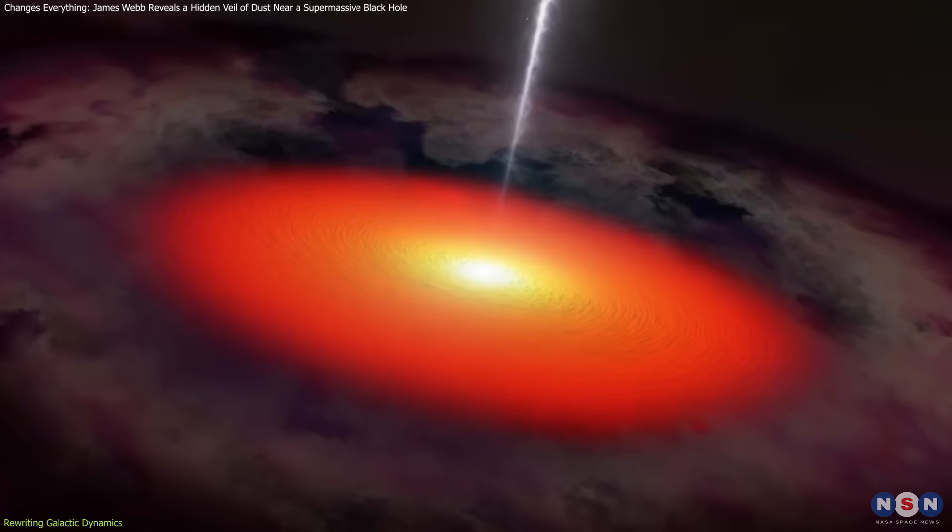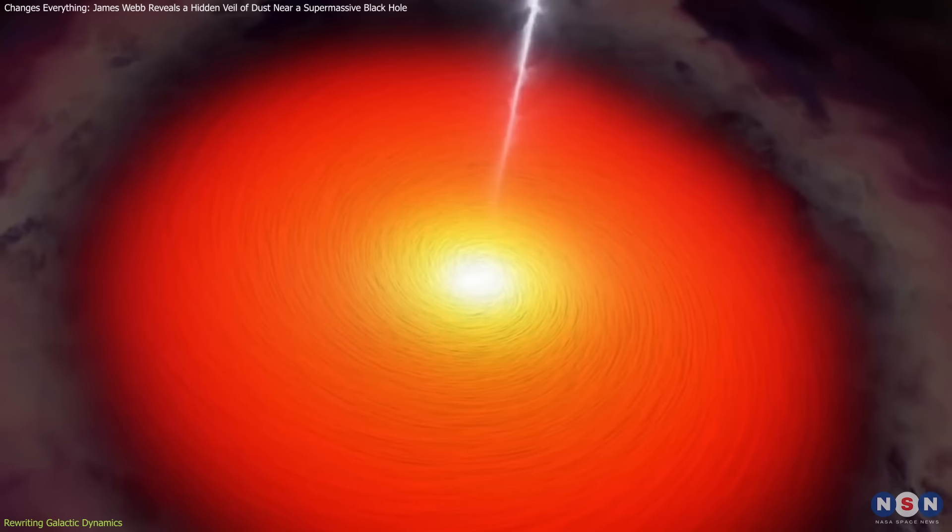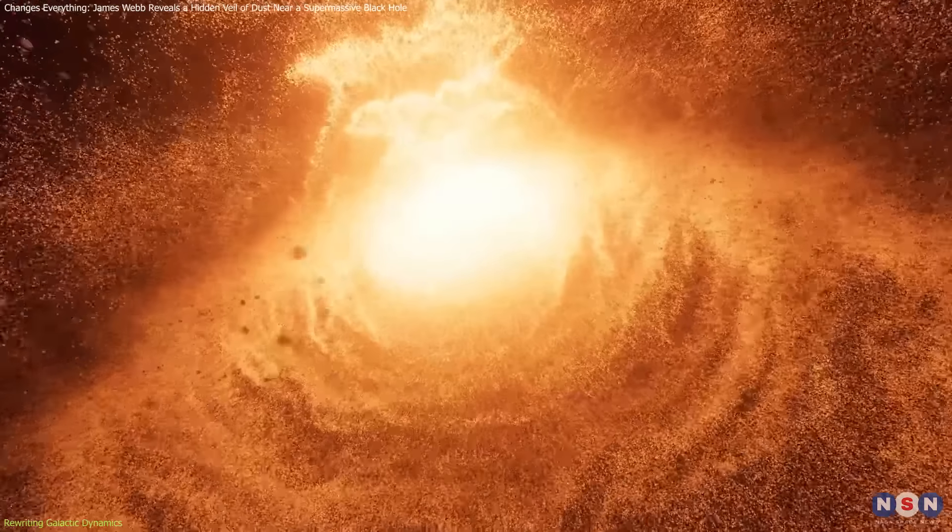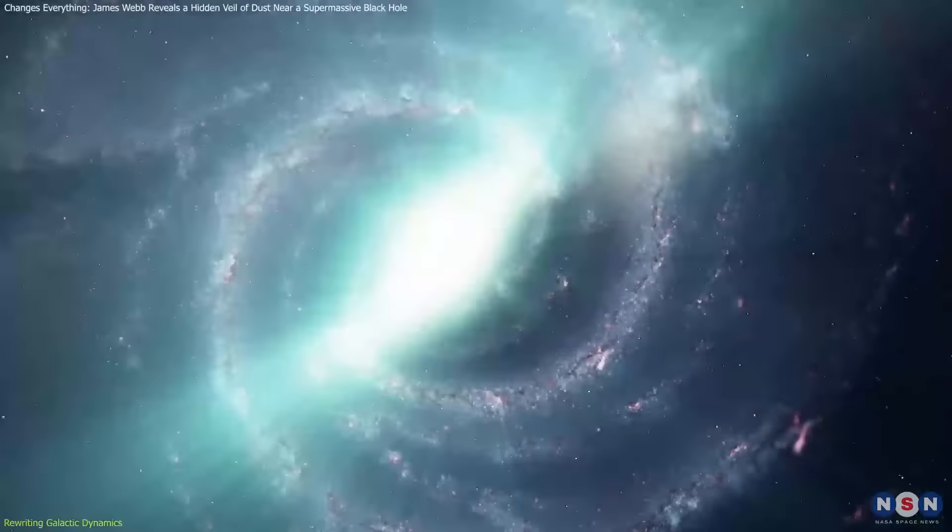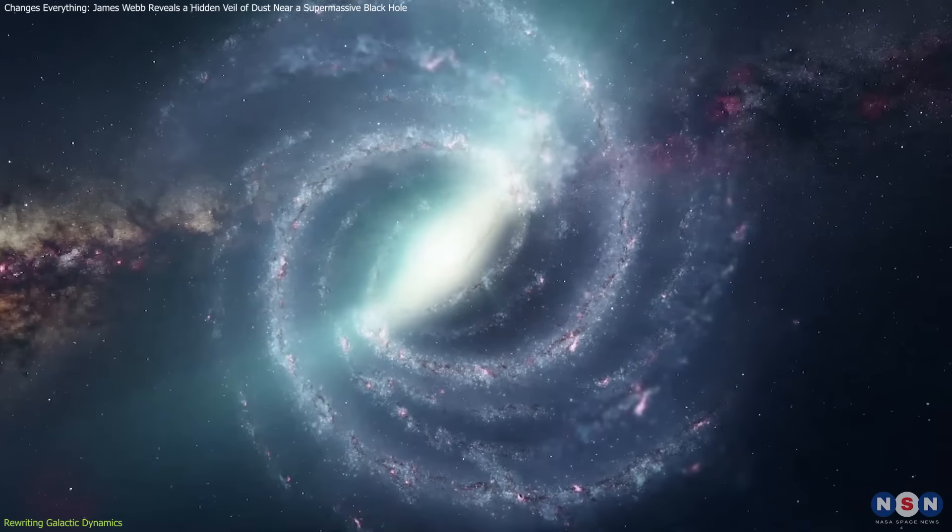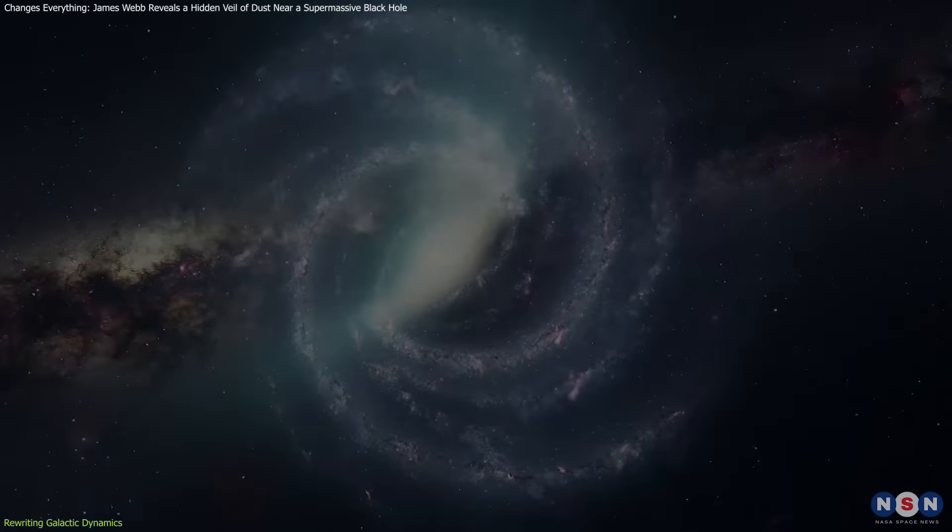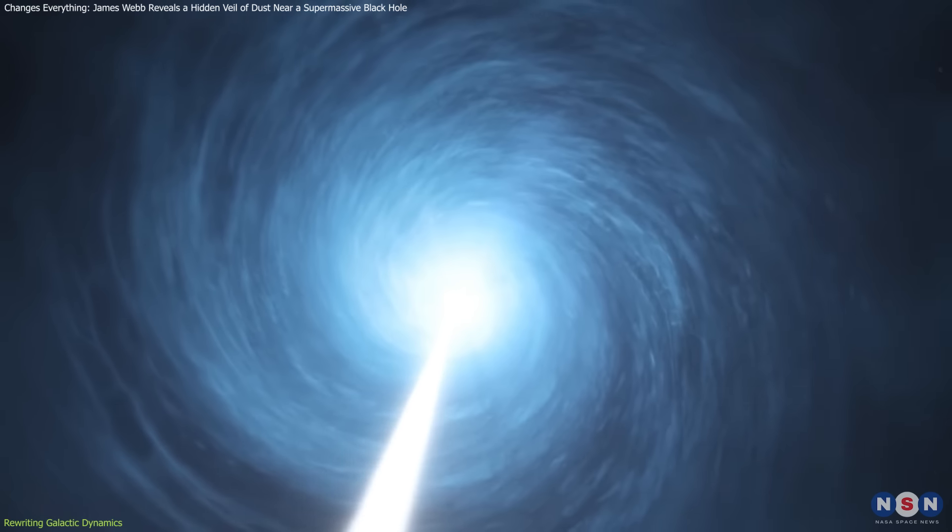The alignment of the dust with the radio jet and its perpendicular orientation to the molecular gas feeding the AGN suggest that multiple processes are occurring simultaneously. This complexity indicates that the distinction between Type I and Type II AGNs may need to be revisited, with greater emphasis on the roles of jets and polar dust in AGN dynamics.